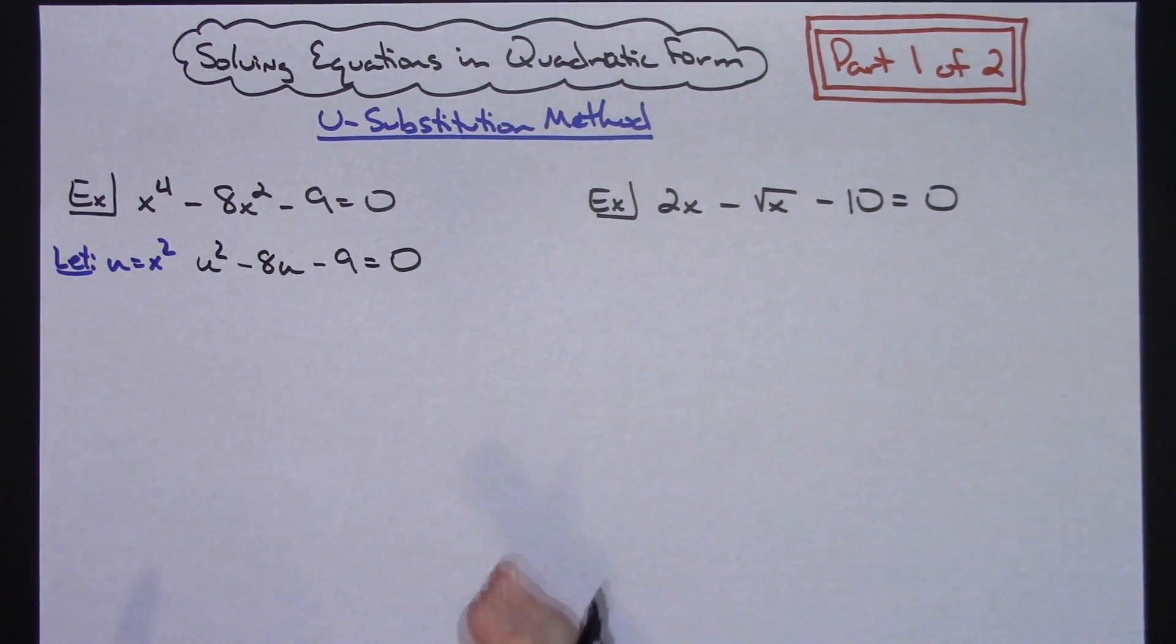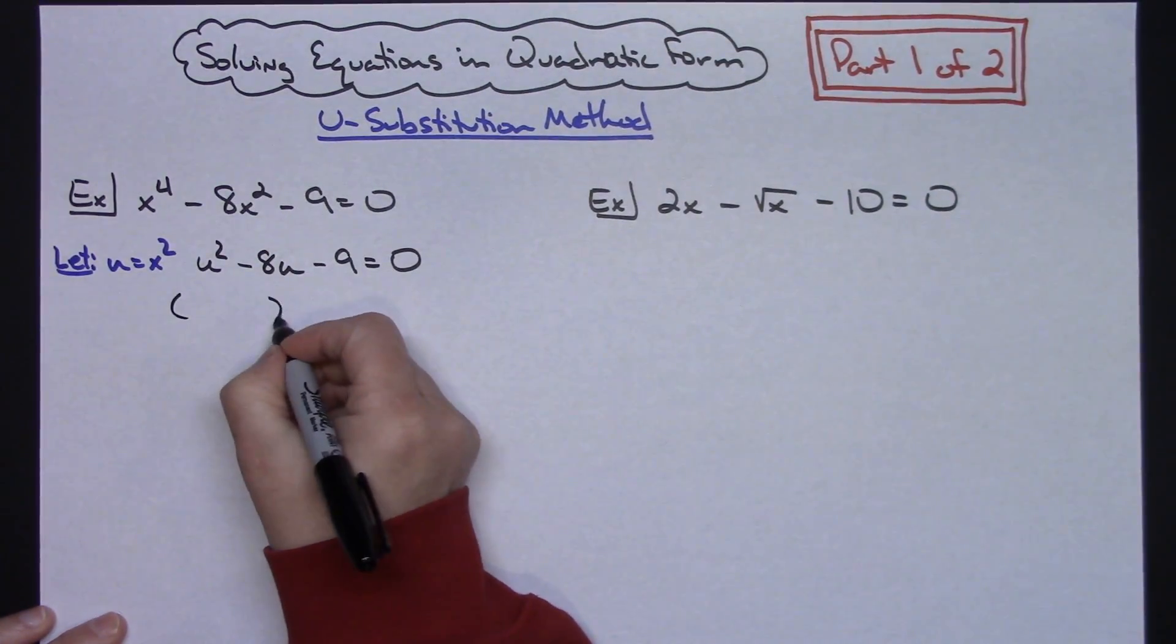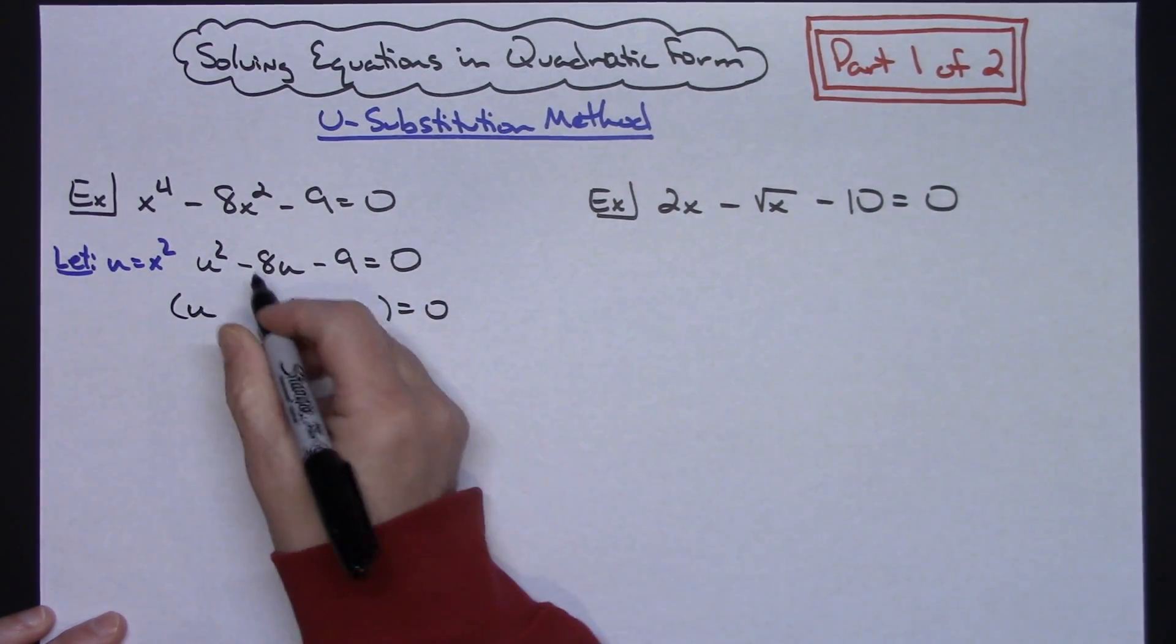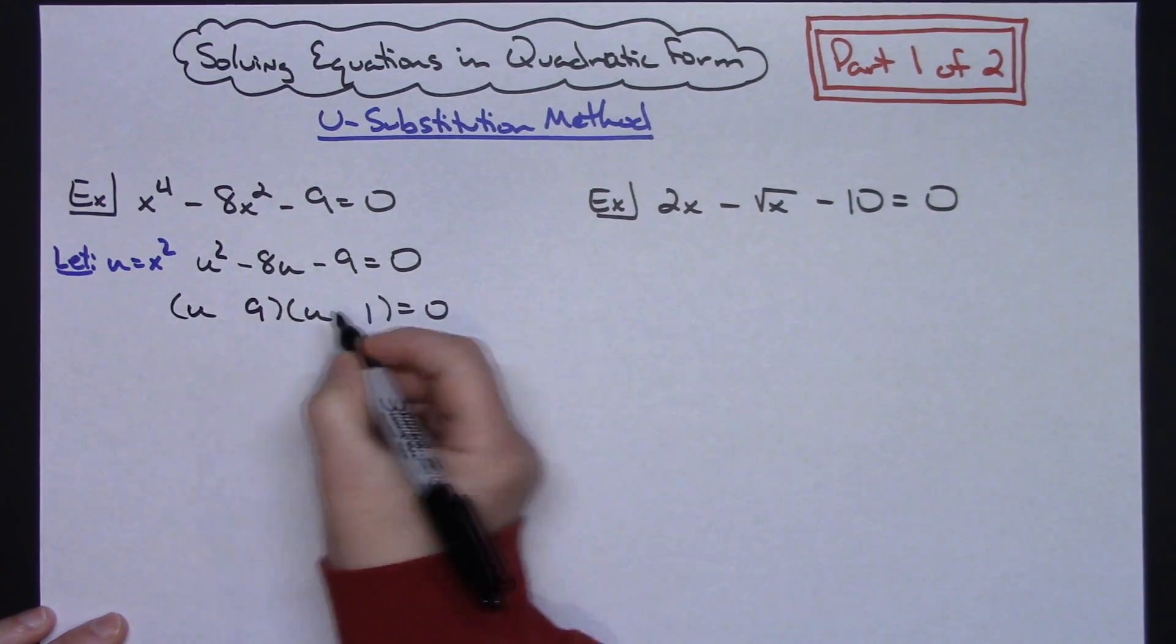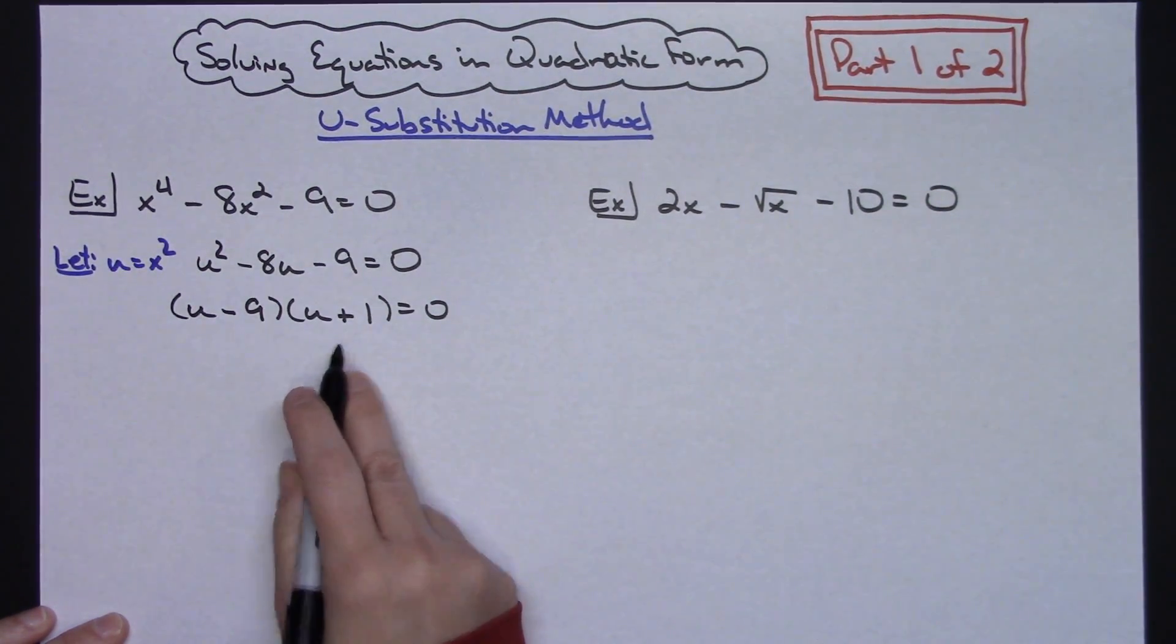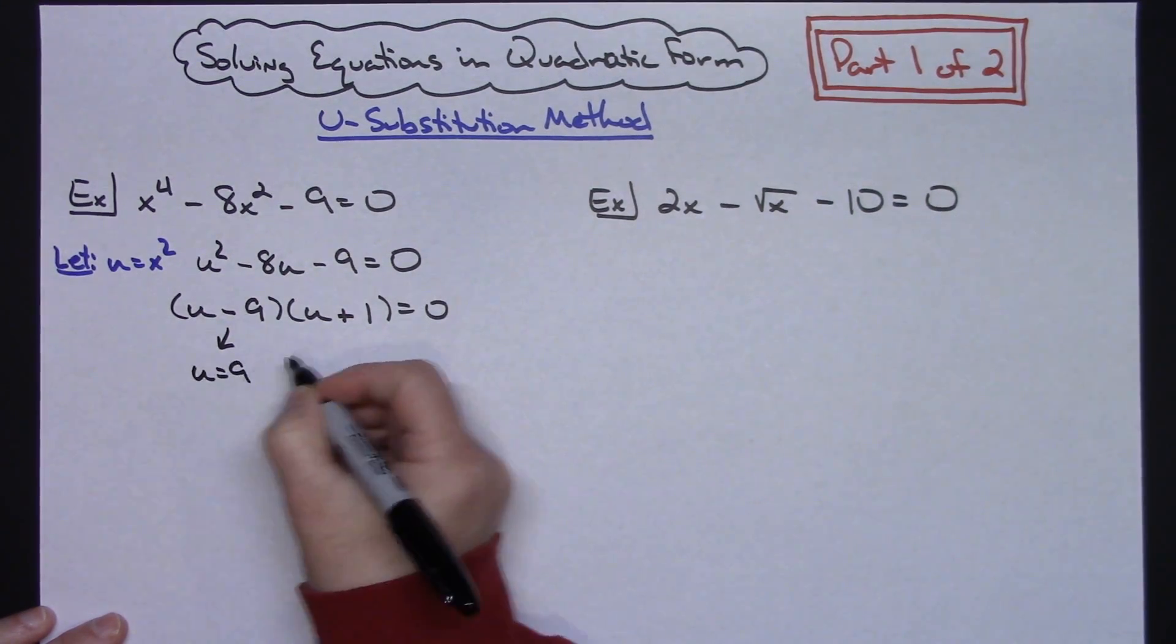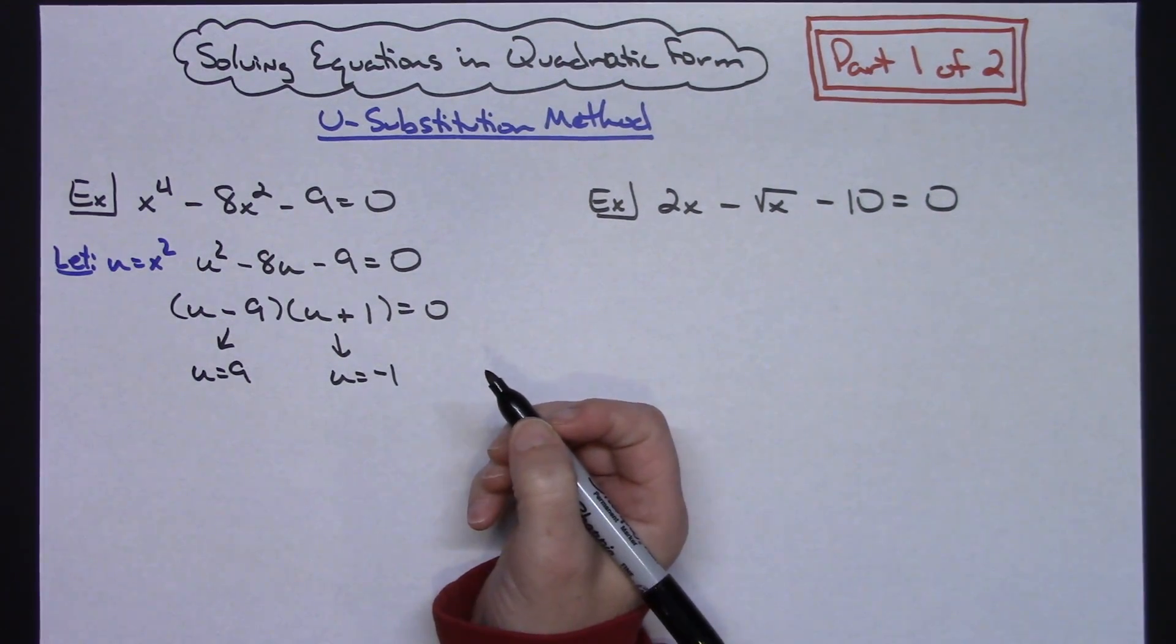Now I have a nice little trinomial here that I can factor by guess and check. So setting this up here, we need a u and a u. To get that 8 in the middle, I'm going to need a 9 and a 1. And it needs to be a -8, so let's make that a -9 and a +1. Now that I've got it factored, I can set each factor equal to 0. And on this one, I can have u = 9. And on this one, I've got u = -1.